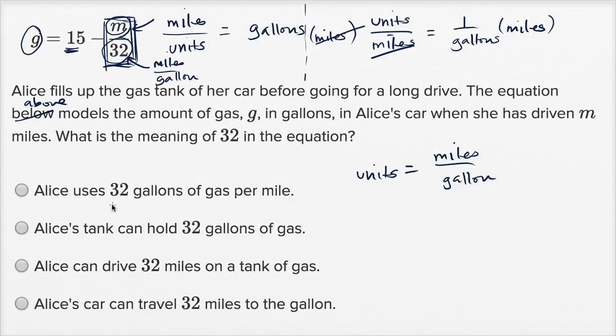Alice uses 32 gallons of gas per mile. Now we have to be very careful, it's miles per gallon, not gas per mile. Alice's tank can hold 32 gallons of gas. No, Alice's tank can hold 15 gallons of gas. She fills up her tank, and before she's driven anything, we see here when m is zero, she's going to have 15 gallons in her car, so that's not right.